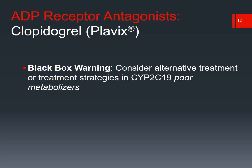Clopidogrel has a black box warning for CYP2C19 poor metabolizers. Ticlopidine, Clopidogrel, and Prasugrel are all pro-drugs, so they need to be activated. If a patient is a CYP2C19 poor metabolizer, or is taking drugs that competitively inhibit this metabolism, you can end up with decreased potency of Clopidogrel, meaning it's not working as effectively.